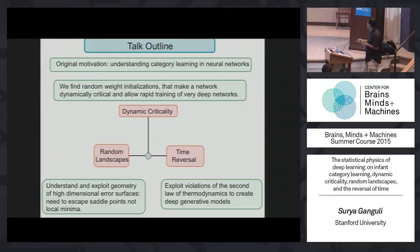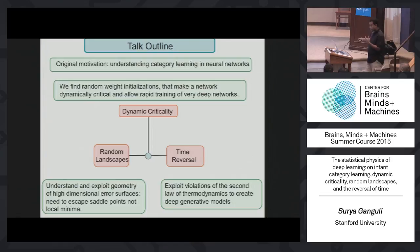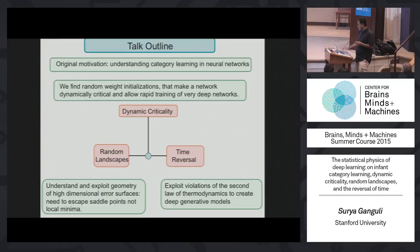The original entry point was trying to understand category learning in neural networks, and at the end of the day we made theoretical advances that led to advances in machine learning and applications to engineering. We found random weight initializations that make a network dynamically critical and allow very rapid training of deep neural networks. We were able to understand and exploit the geometry of high-dimensional error surfaces to speed up learning, and we exploited recent work in non-equilibrium thermodynamics to learn complex probabilistic generative models.